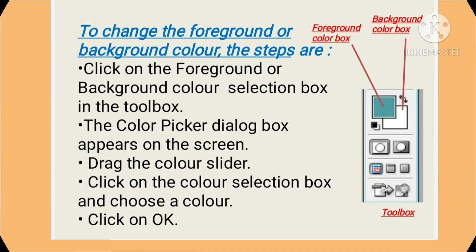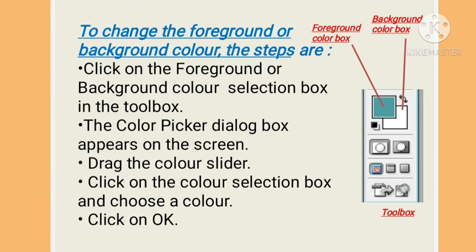Now we will learn how to change the foreground or the background color. First, click on the foreground or the background color selection box in the tool box. Second, the color picker dialog box appears on the screen. Drag the color slider, click on the color selection box and choose a color. Then click OK.